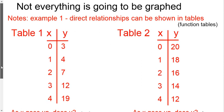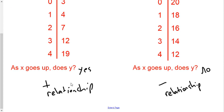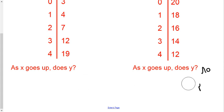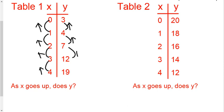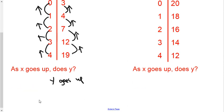So let's go through and see what's happening. As the x goes up: 0 to 1 — up; 1 to 2 — up; 2 to 3 — up; 3 to 4 — up. What's happening with the y's? 3 to 4 — up; 4 to 7 — going up; 7 to 12 — a bigger jump but still goes up; 12 to 19 — still goes up. Basically, y goes up. X increased, y increased — therefore we're going to call it a positive relationship.